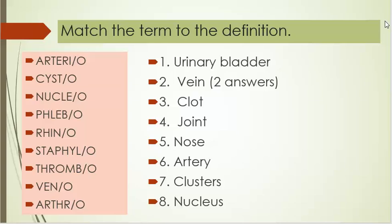Number four: joint. Number five: nose. Number six: artery. Number seven: clusters. Number eight: nucleus.